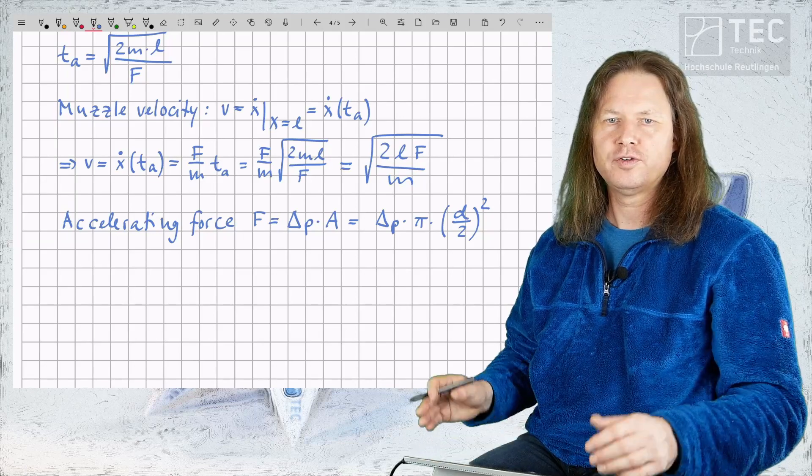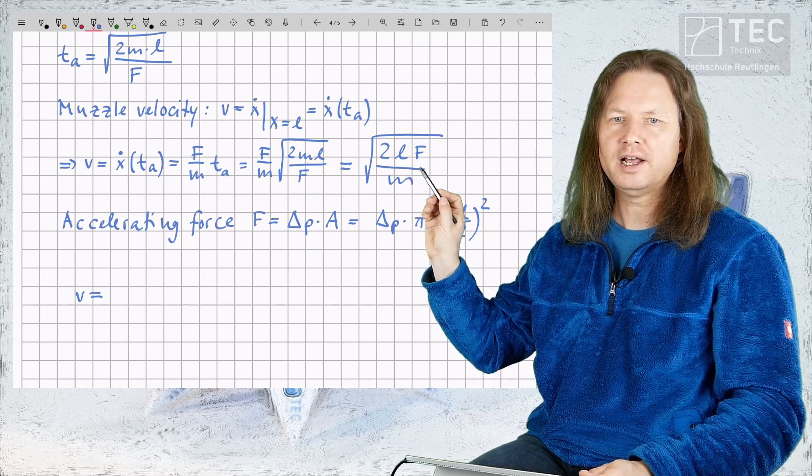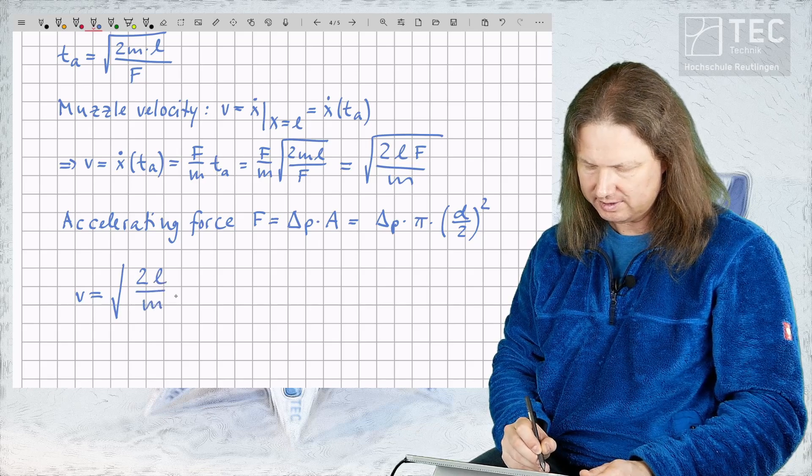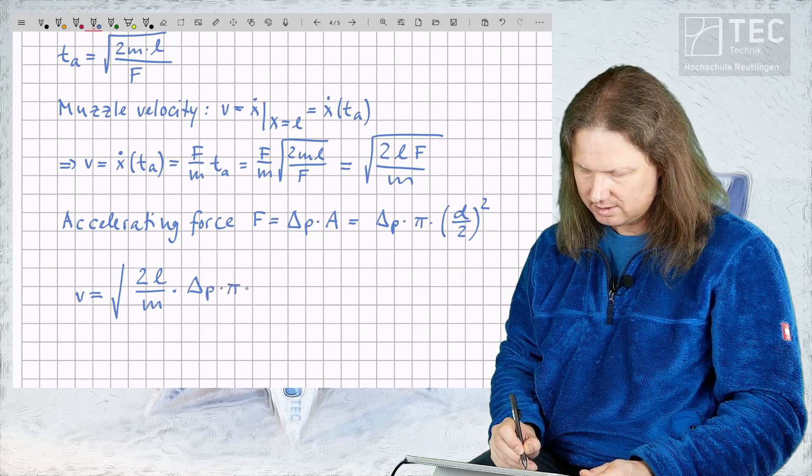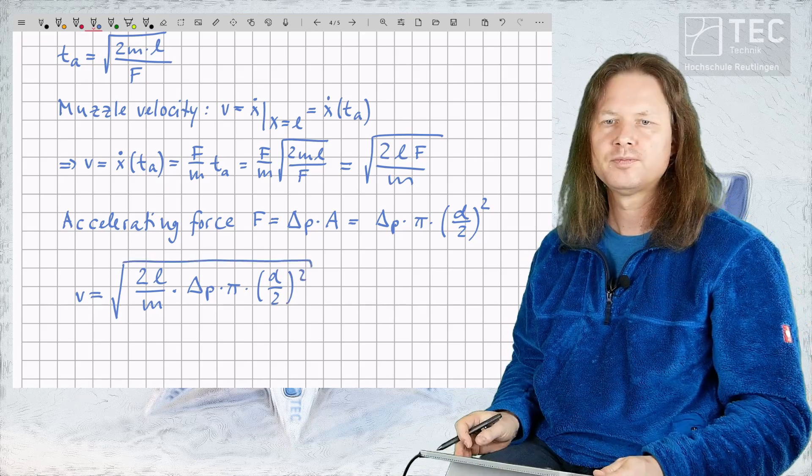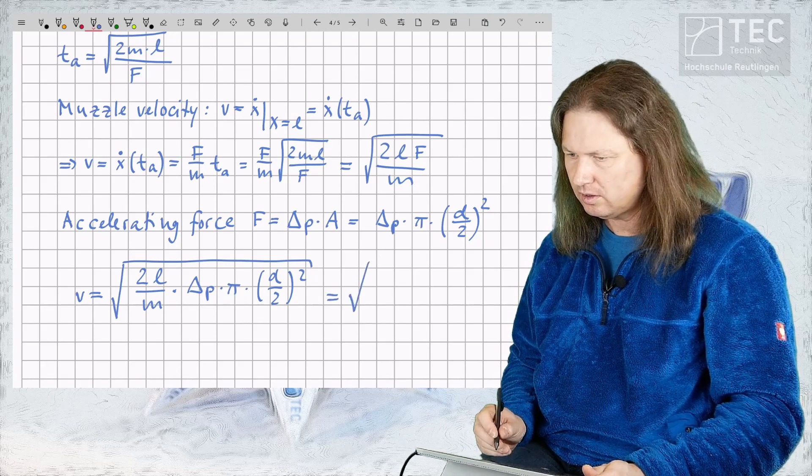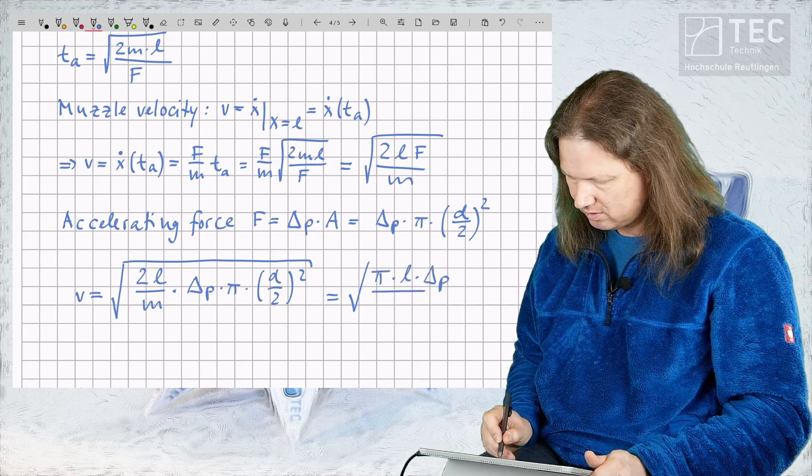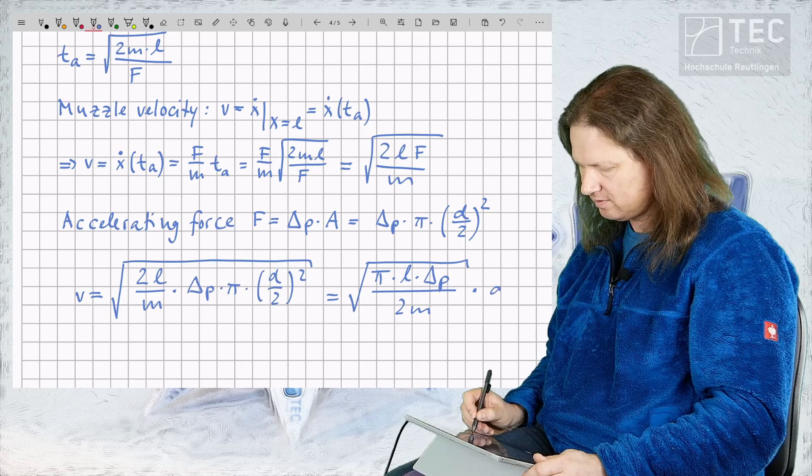We can now find the desired expression for the muzzle velocity V. We have V is equal to square root of 2L F over M. That's the square root of 2L over M times the accelerating force which is delta P times pi times one half D squared. And finally we can simplify this expression to obtain V is equal to the square root of pi times L times delta P over 2M multiplied with a blowgun diameter D.